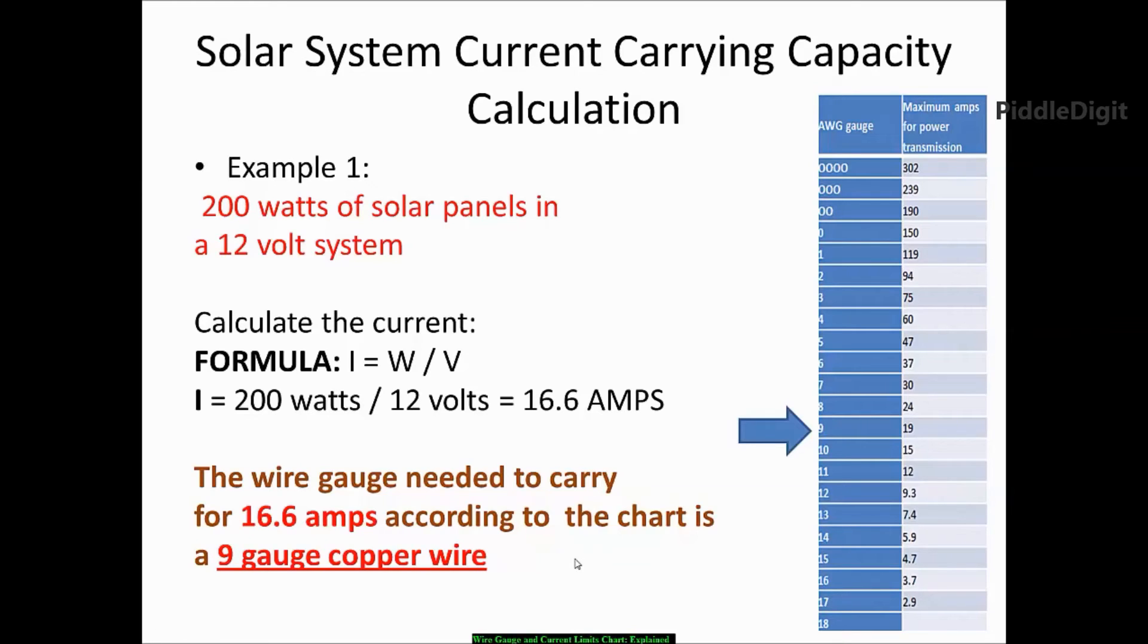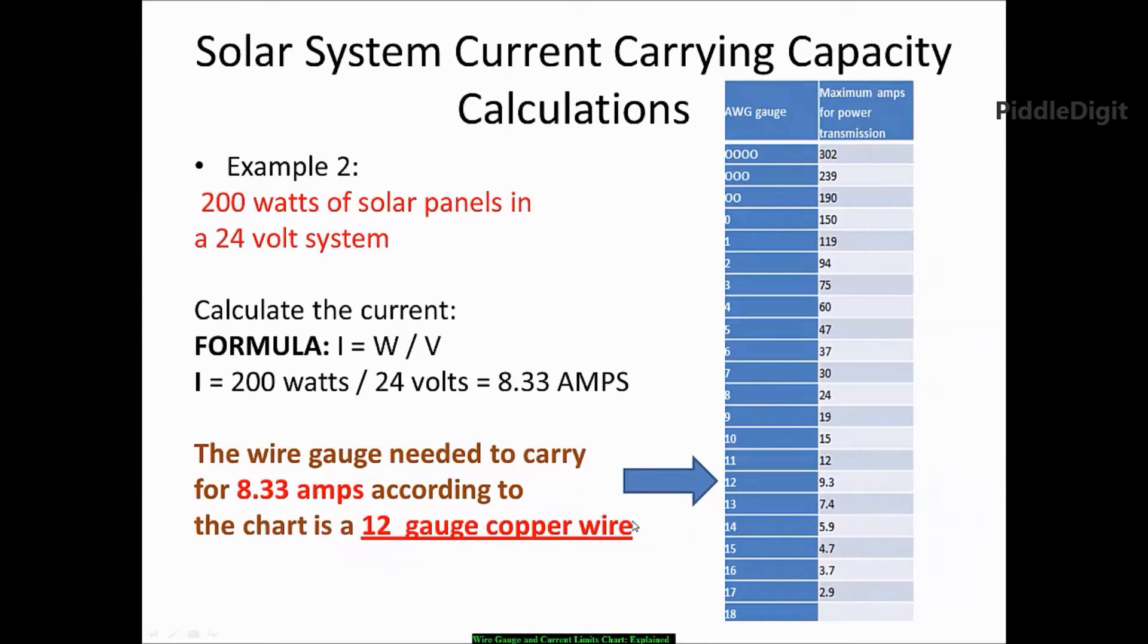Let us go to the other example, which is a 24 volt system using the same 200 watts of solar panels. So here in this example, we have a 24 volt system that we want to deploy. We still have 200 watts of solar panel.